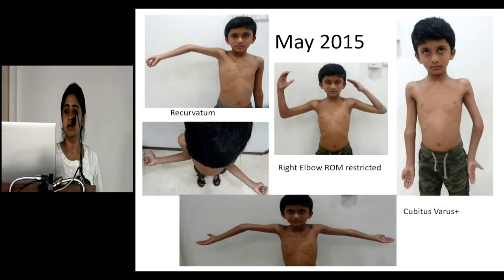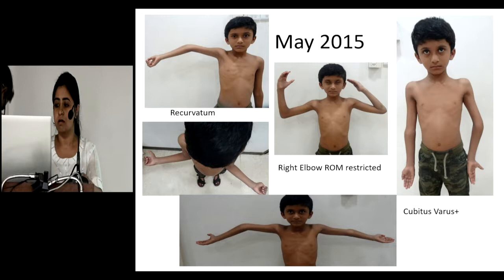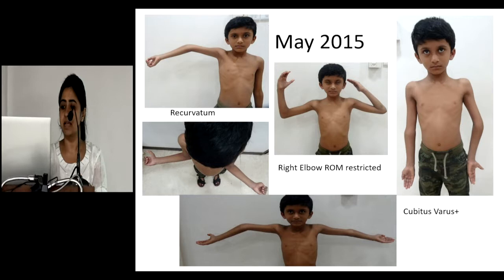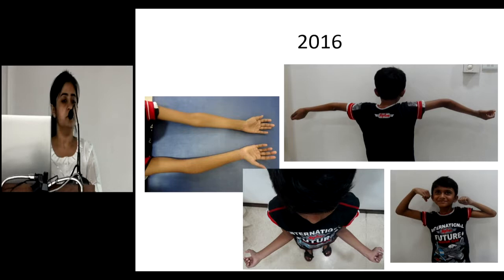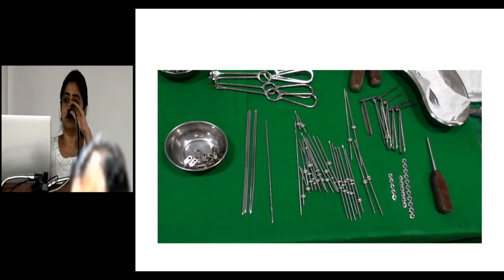We had an 11-year-old boy who had a supracondylar fracture humerus treated with a plaster elsewhere. When he presented to us, he had a cubitus varus deformity with hyperextension and restricted elbow range of motion.